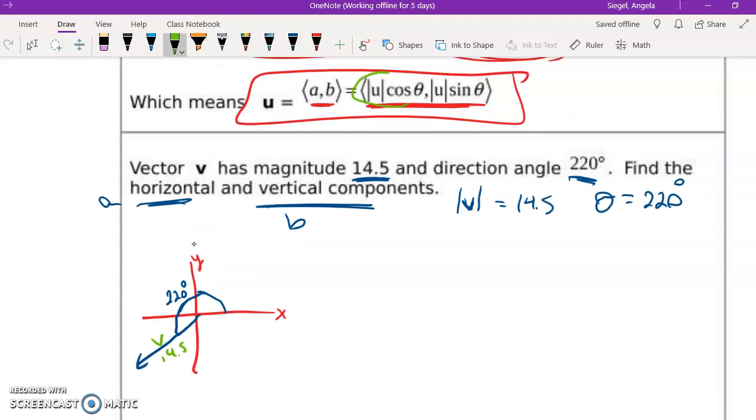So I know to find A is going to be the magnitude times the cosine of theta. So I have 14.5 times the cosine of 220, and I get about negative 11.1 for A. So let's see if that makes sense. Oh yeah, because it's in the second quadrant, so that makes sense that it's negative.